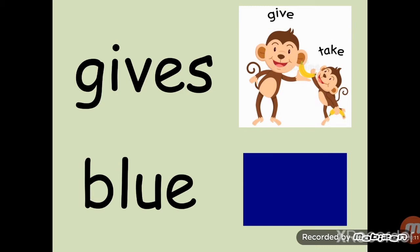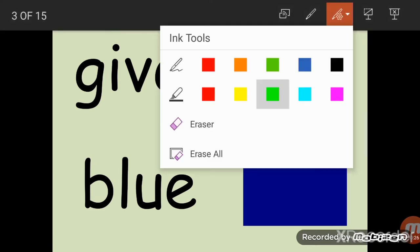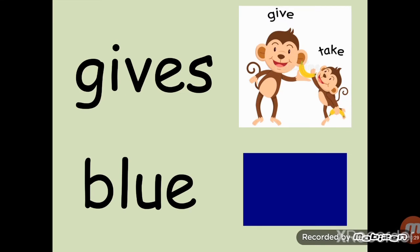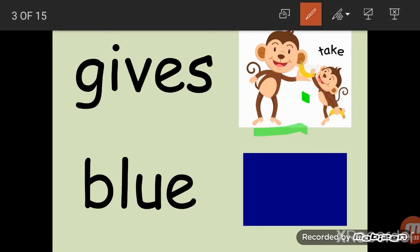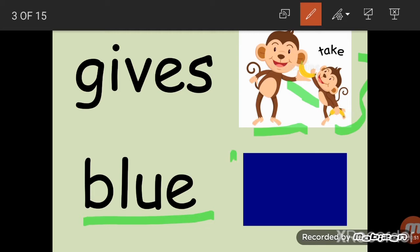Next we have 'gives' — G-I-V-E-S. Gives means to give something to someone — kisi ko koi cheez dena. You can see the bigger monkey is giving the banana and the smaller monkey is taking it. So 'gives' means dena. Next we have 'blue' — B-L-U-E. Blue is a color. We are going to learn so many colors in this unit, Inshallah.